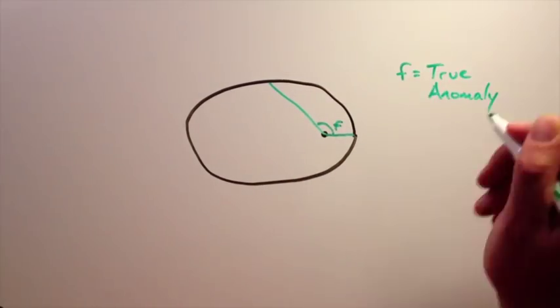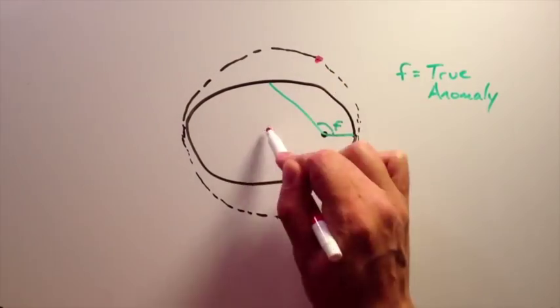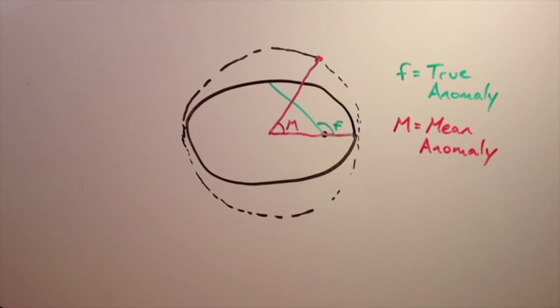The true anomaly and mean anomaly are variables used to describe a satellite's position within an orbit. Before we continue, you'll want to make sure you have good understanding of basic orbital shapes and how a satellite moves within an elliptical orbit.